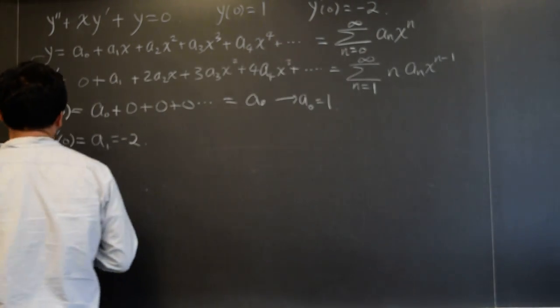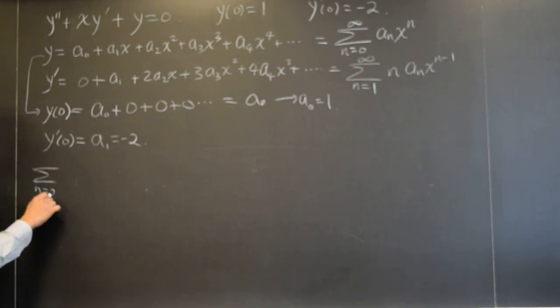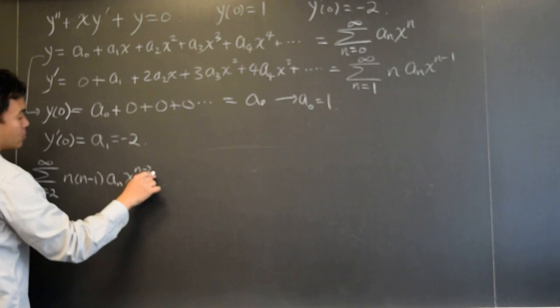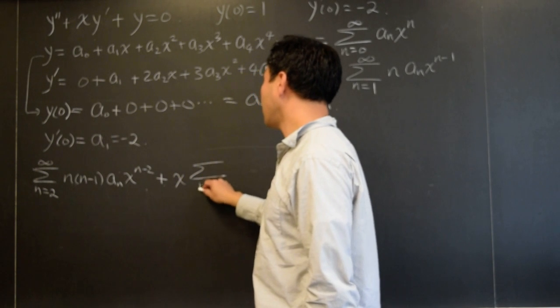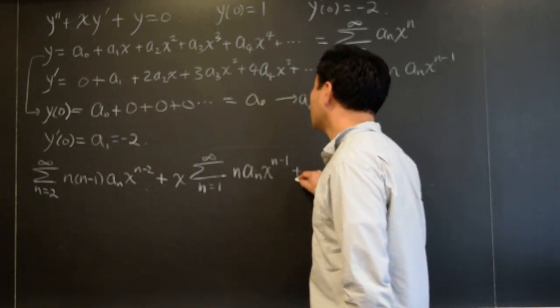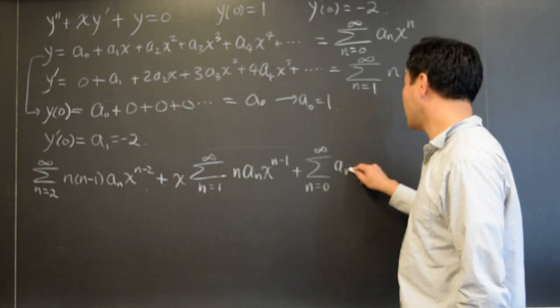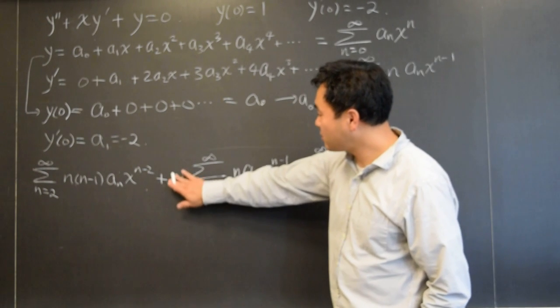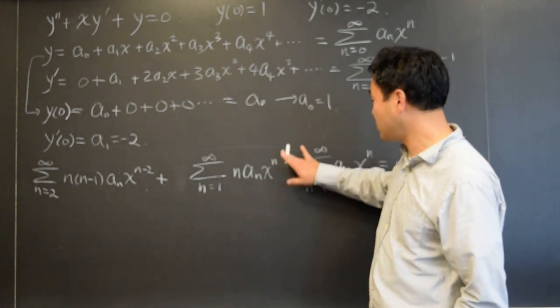Alright. So going back here. Now, let's plug everything in. So y double prime, if you differentiate that one more time, you get n from two to infinity, n times n minus one, a n, x to the n minus two, plus x times y prime is this thing, sigma n from one to infinity, of n a n, x to the n minus one, plus y is sigma n from zero to infinity, a n, x to the n equals zero. Now, if this x is multiplied inside this, it's x to the first power, so one gets added to the exponent, so that's what you're going to get.